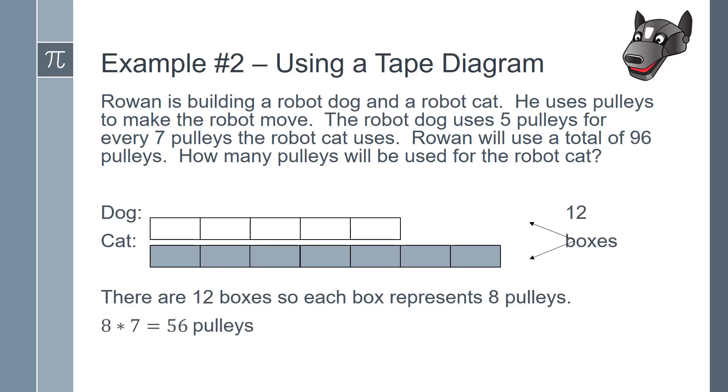8 times 7 equals 56. So Rowan will use 56 pulleys to make the robot cat.